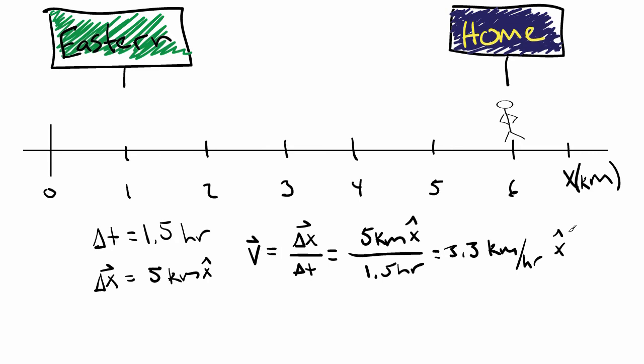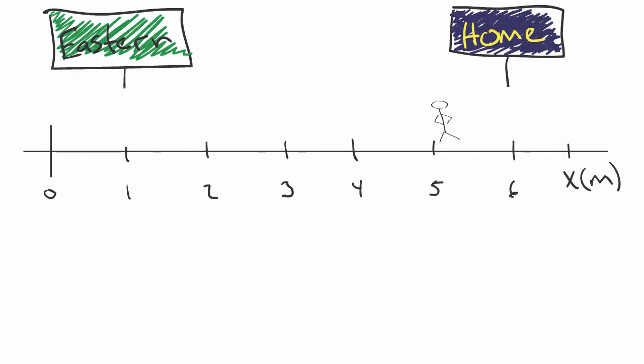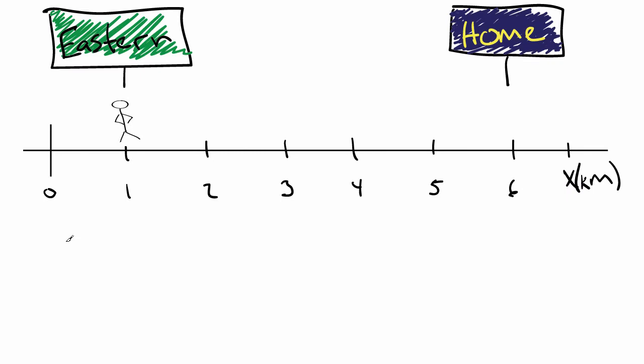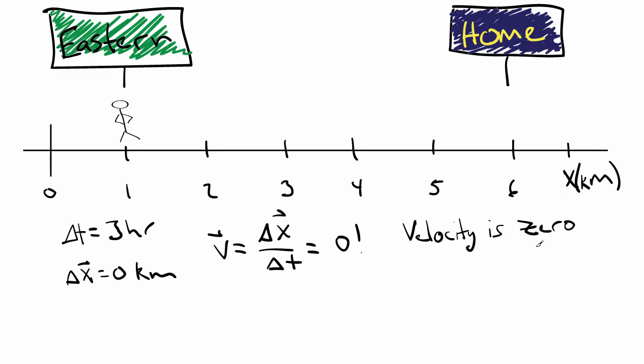So what do you suppose the velocity for the entire trip from campus to home and back is? Well, since the displacement is zero, then the velocity must also be zero. Does this make sense? Surely you were moving as you traveled from eastern to home and back. Again, this highlights the fundamental difference between the vector quantity and its scalar counterpart. While the velocity turned out to be zero, your speed during the trip is not.